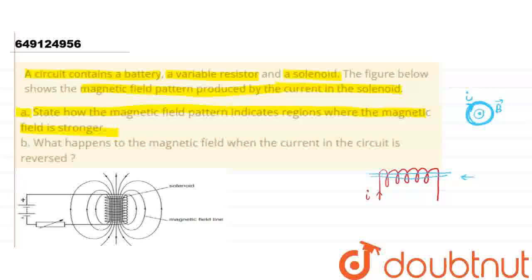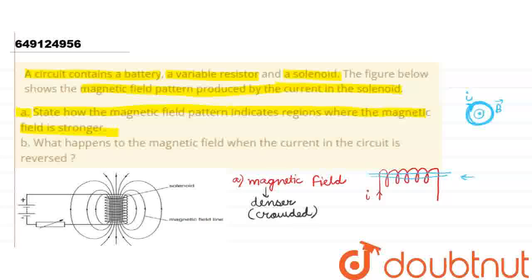The direction has been given to us, and based on that we need to identify where the magnetic field will be strongest. To determine this, we need to see where the magnetic field lines are densest. Where the magnetic field lines are most dense or crowded, the magnetic field is the strongest there. We can see that along the solenoid's axis, the density of the magnetic field lines is highest.